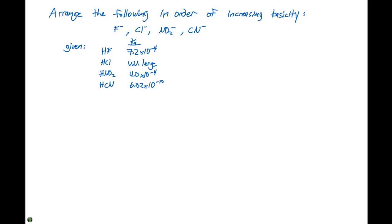This example problem asks us to arrange the following in order of increasing basicity: F⁻, Cl⁻, NO₂⁻, and CN⁻. All of these are conjugate bases of acids.